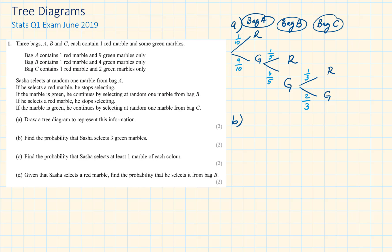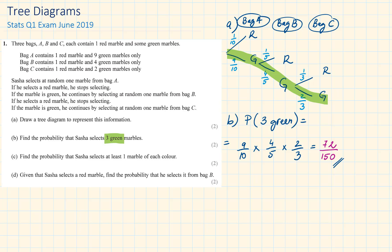For part B, find the probability that Sasha selects three green marbles. Well there is only one way of selecting three green marbles, if he's going to select green from bag A, from bag B and then from bag C. To solve this, we times the probabilities along the branches. 9 tenths times 4 fifths times 2 thirds. This is equal to 72 over 150. When solving probability questions, any equivalent fractions will give you the full marks, so no need to simplify it.